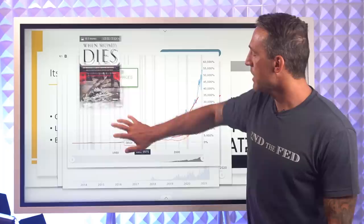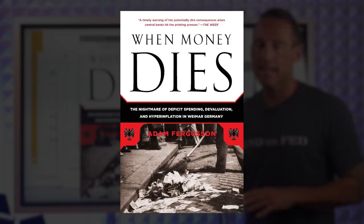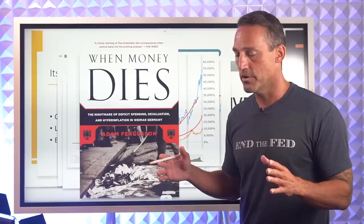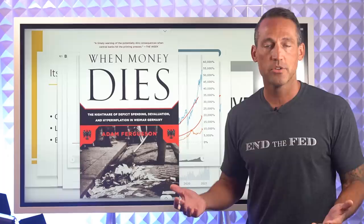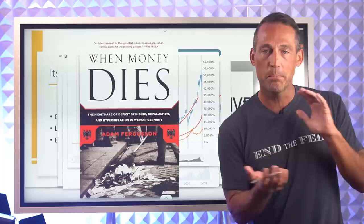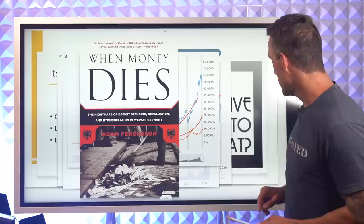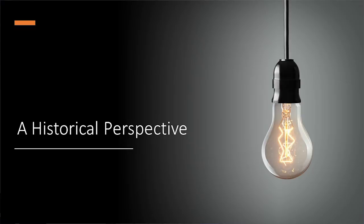There's a book called When Money Dies — a great book about Germany. They said that as prices were going high, everyone thought they were getting rich. They were selling all their assets for those sky-high valuations, banking the fiat currency. At the end, they wished they would have held on to the assets. We'll get back to that.